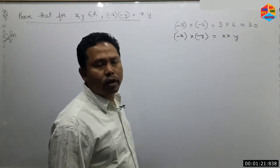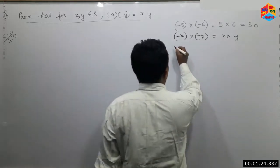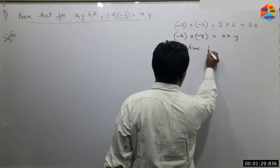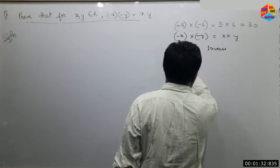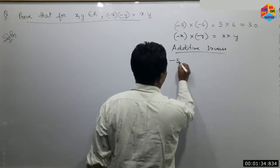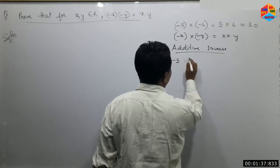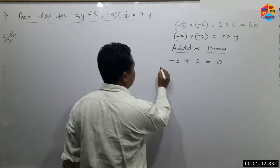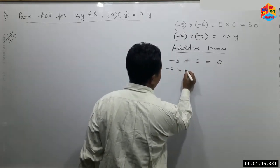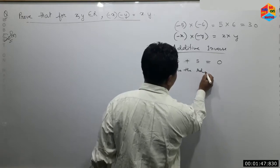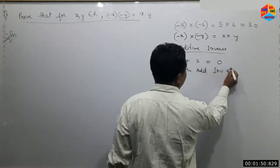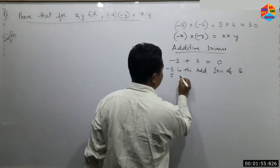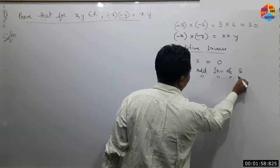Additive inverse — the definition of additive inverse. Minus 5c plus 5c equals 0. Therefore, minus 5 is the additive inverse of 5, or 5 is the additive inverse of minus 5.